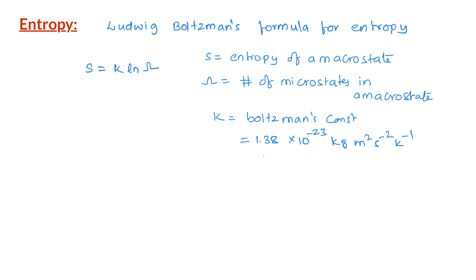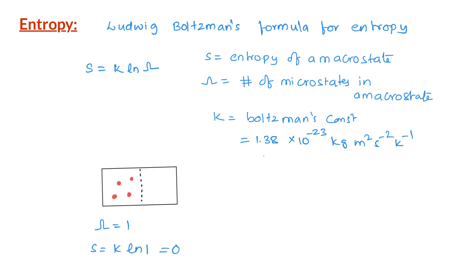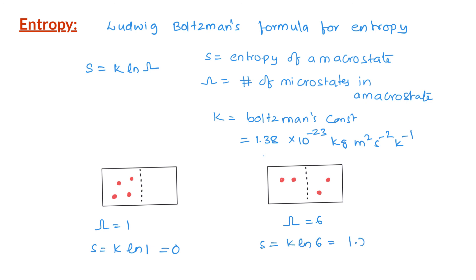For example, the entropy of arrangement 1 with only one microstate: Ω = 1, so S = K ln 1 = 0. The entropy for this arrangement is 0. For arrangement 3 with 6 microstates: S = K ln 6 = 1.79K. So when the stopcock is opened and the gas expands homogeneously to achieve arrangement 3, the entropy of the system increases by 1.79K.